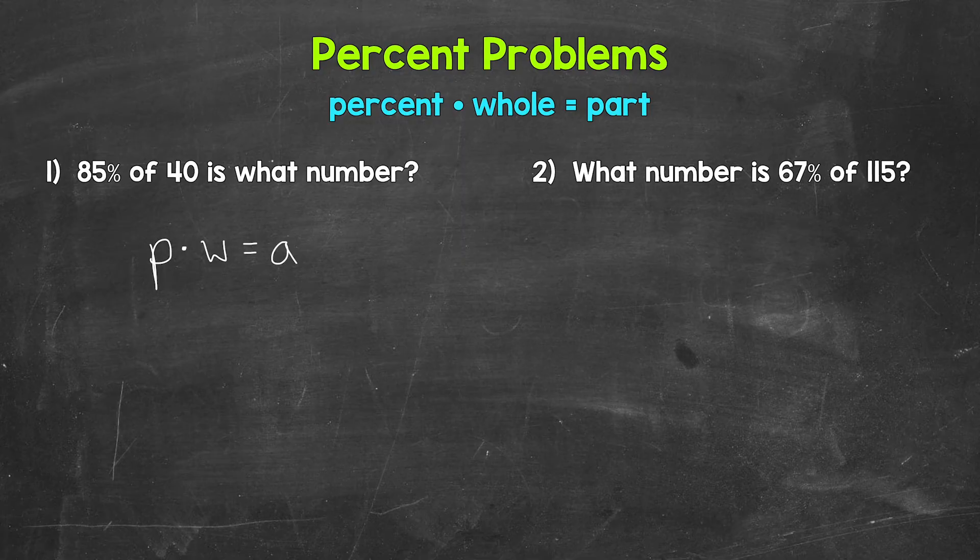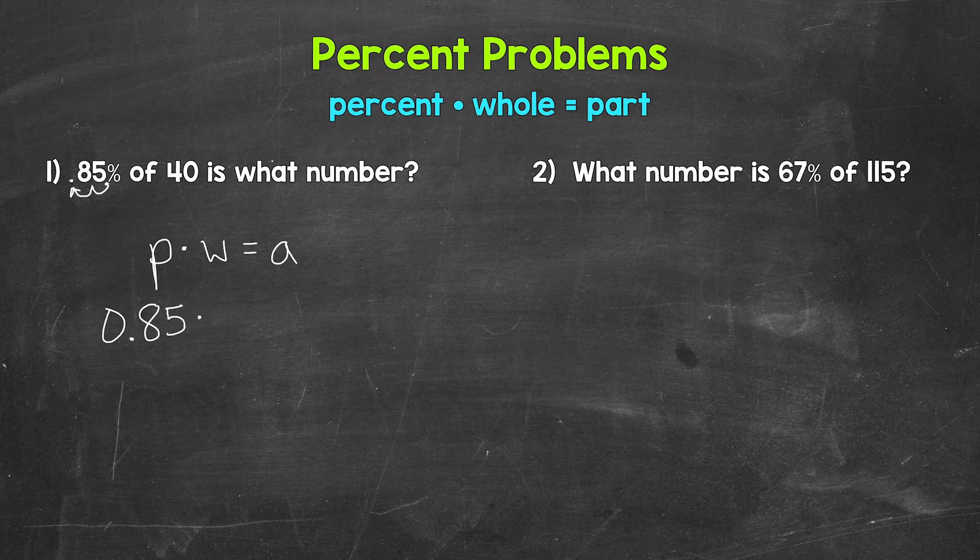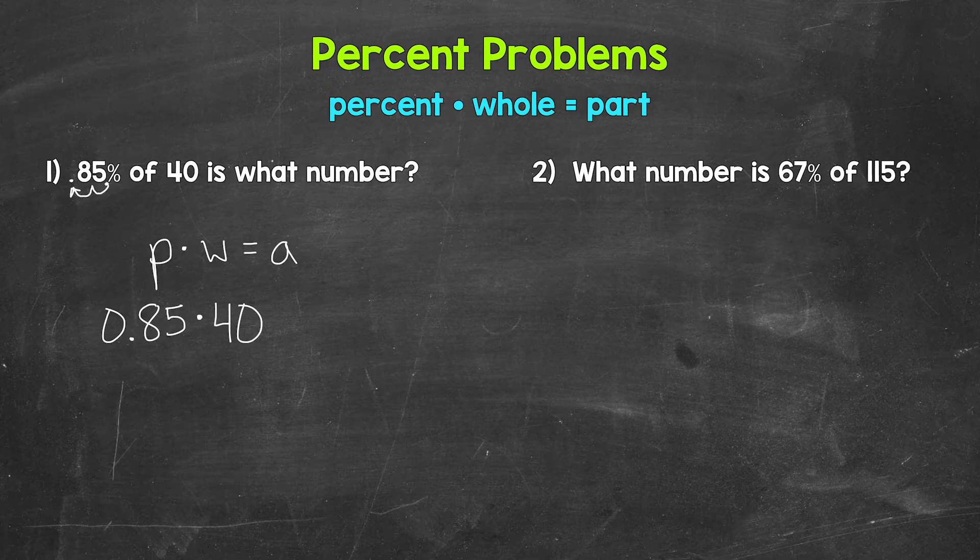So for 85%, the decimal is right here, after a whole number, and we move it once, twice to the left. So we get 0.85, 85 hundredths. And that's what we plug in for the percent. So 85 hundredths times the whole, which is 40, equals the part, which is the unknown here. So we keep our variable of a.